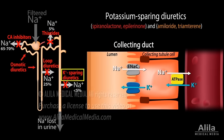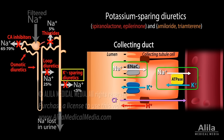Potassium-sparing diuretics act mainly in the collecting duct. Here, sodium reabsorbs through epithelial sodium channels, then the sodium-potassium pump, in exchange for potassium loss. Sodium influx into cells creates a negative lumen potential, which drives reabsorption of chloride and excretion of potassium and hydrogen. Both ENaC and the sodium-potassium pump are induced by aldosterone.